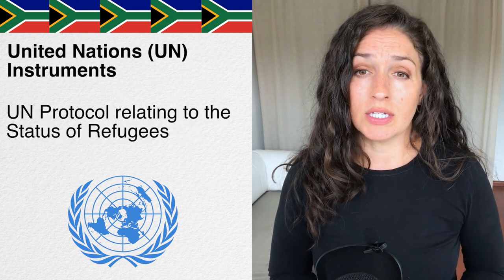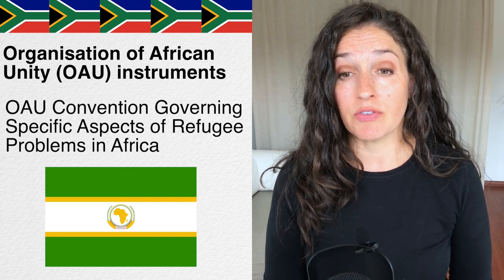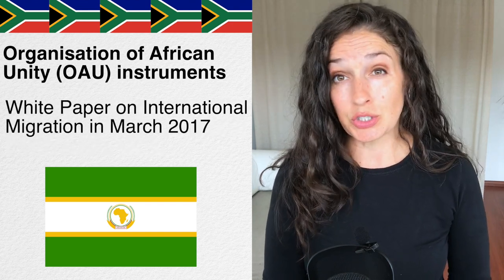South Africa is also a signatory to a number of international conventions and UN instruments. They are a signatory to the UN Convention Relating to the Status of Refugees and the UN Protocol Relating to the Status of Refugees — essentially the 1951 Convention and the 1967 Protocol on refugees. They are also a signatory to the Global Compact for Safe, Orderly and Regular Migration, and party to a number of Organization of African Unity instruments, including the Convention Governing Specific Aspects of Refugee Problems in Africa and the White Paper on International Migration from March 2017. However, South Africa has not signed the International Convention on the Protection of the Rights of All Migrant Workers and Members of Their Families, so there is still some work to be done.